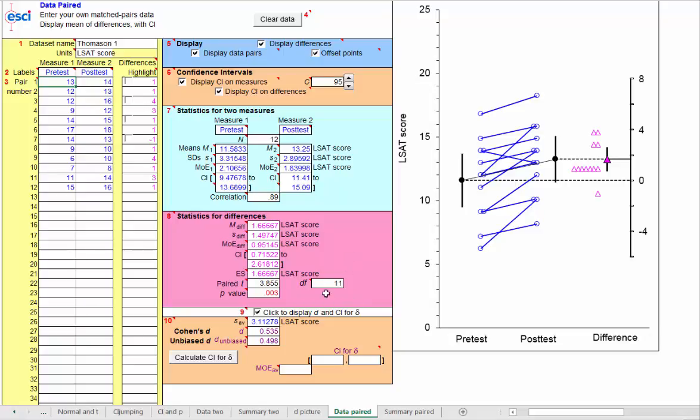We've got 11 degrees of freedom, quite small, so D unbiased is noticeably less than D around 0.535, D unbiased 0.498.